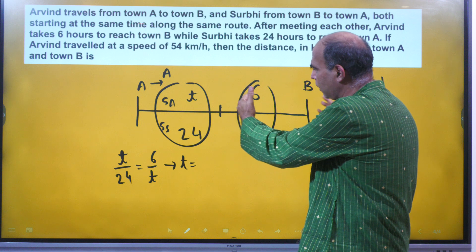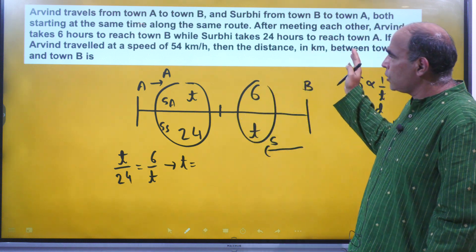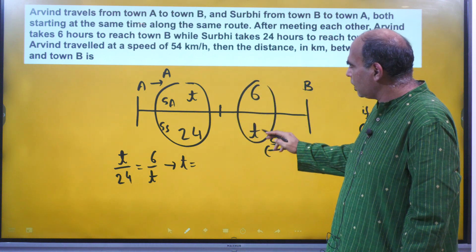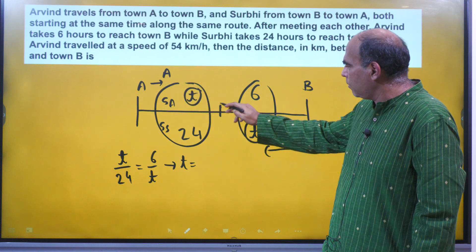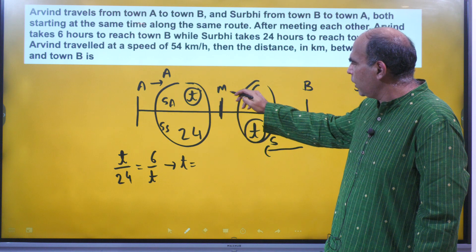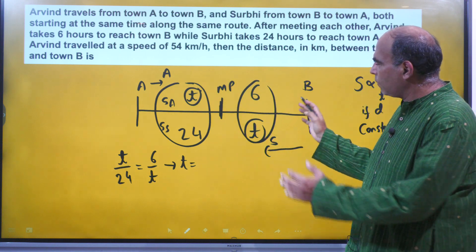Arvind travels from there to here, they travel from here to there. After meeting each other, Arvind takes 6 hours. So they take some time to meet each other. Two ek sath start karte hain, so Arvind ko t hours laghega yaha paunchne mein meeting point, or Surbhi ko t hours laghega yaha paunchne mein.